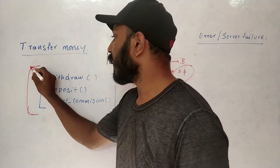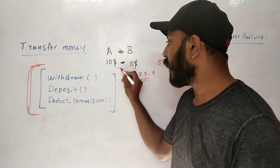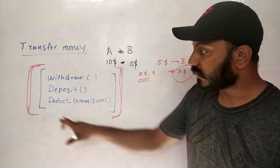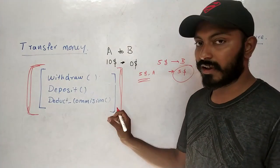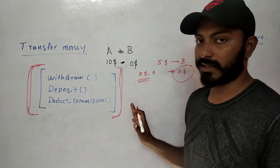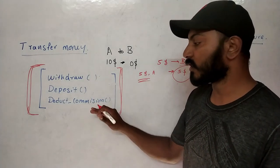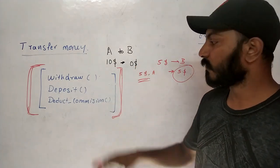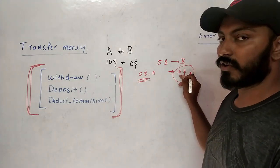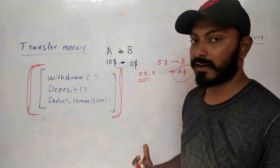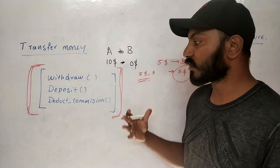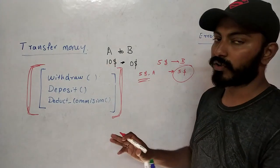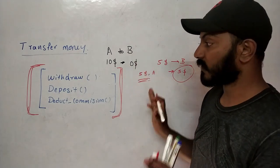If we use a transaction, all three instructions are covered as a unit of work. If everything goes well it commits; otherwise everything is scrapped. In the same error scenario, $5 is deleted from account A, but when the deposit fails, the transaction will revert everything. The $5 is added back to account A, so we still have $10 and nothing was transferred to B. Transaction saved us here.